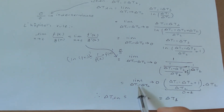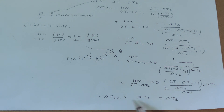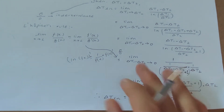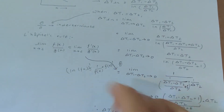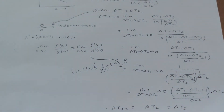Finally, the logarithmic mean temperature difference turns out to be equal to Delta T2, which is also equal to Delta T1, since that was our special condition. So when Delta T1 and Delta T2 are equal, the logarithmic mean temperature difference is simply equal to Delta T1 or Delta T2. Thank you so much.